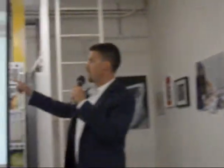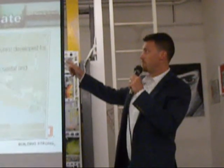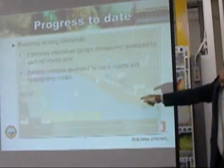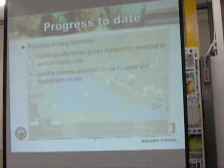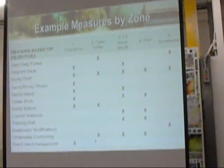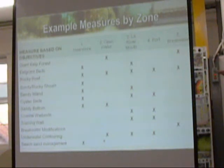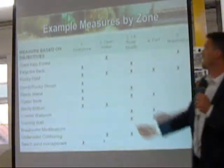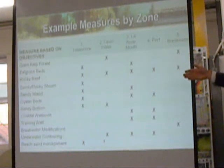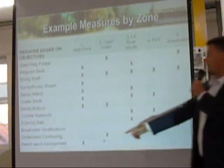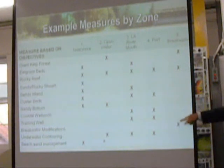First up, we have the preliminary working alternatives. There are a number of alternative groups — groups of measures developed for each opportunity zone. On the graph you can see there are five opportunity zones, and some baseline scenarios were developed for this modeling. The measures based on the objectives are listed in one column, and the five zones are across the top, showing where each measure fits within each opportunity zone. For example, breakwater modifications are obviously applicable at the breakwater.